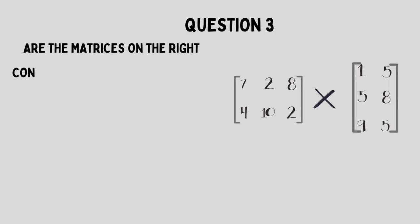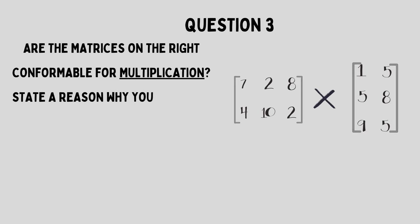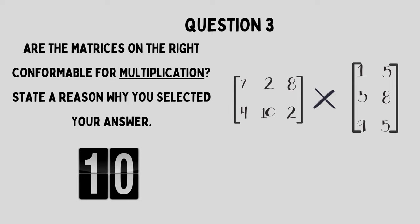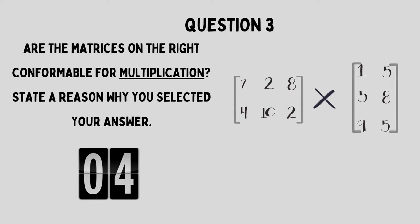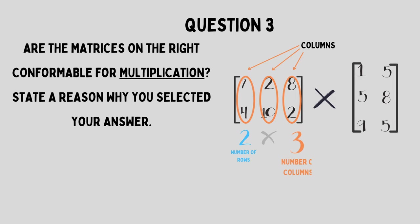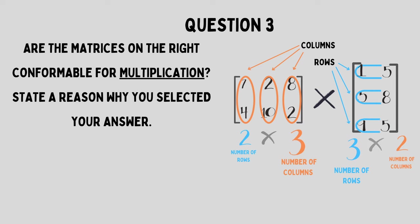Now multiplication. Do you think that these matrices here are conformable for multiplication? The first matrix has three columns and the second matrix has three rows. As you can see, the numbers in the middle are equal to each other. Therefore, they are in fact conformable.